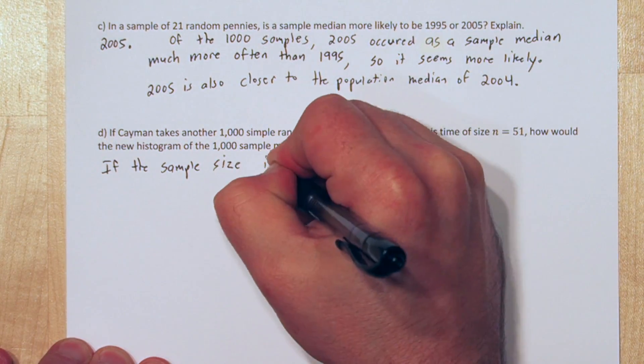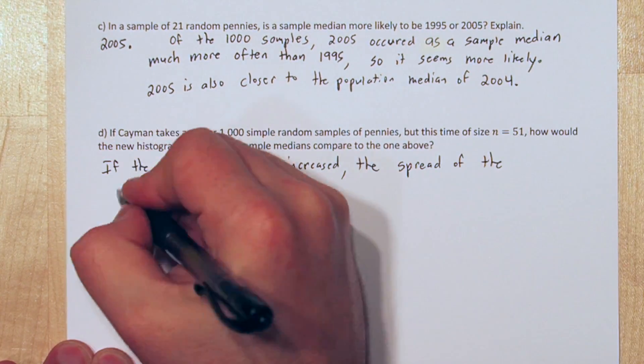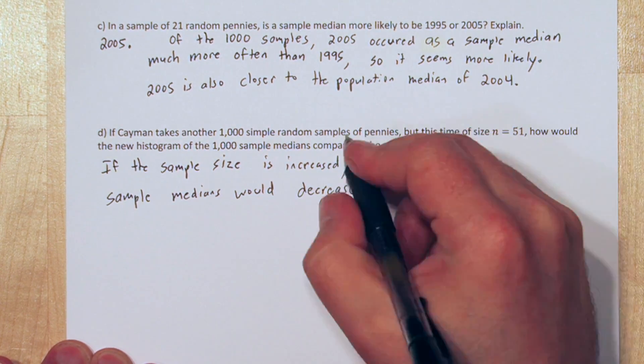If Cayman increases his sample size of each of the 1,000 samples, the spread of the sample medians would decrease.